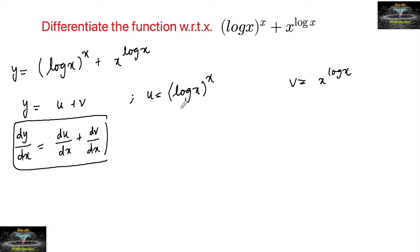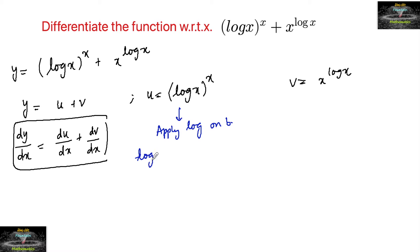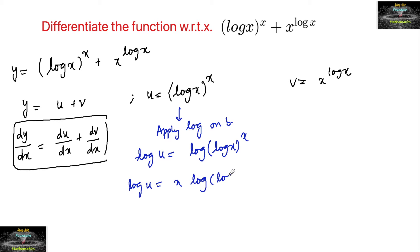For u equal to (log x)^x, apply log on both sides. So log u is equal to log of (log x)^x, which we can write as log u equals x times log(log x). Now differentiating with respect to x.